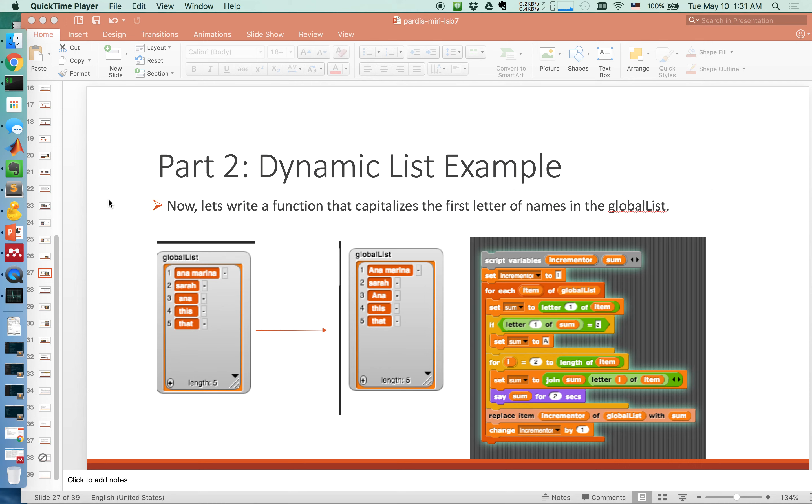So we got to the point where we decided to have our global list with five items. We converted it into another list, which also has five items, but the first element is capitalized.